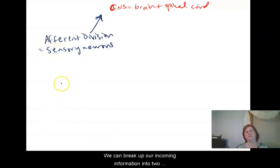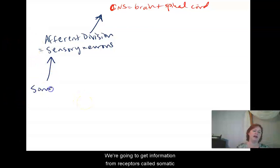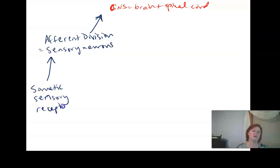We can break up our incoming information into two primary sets of information. We're going to get information from receptors called somatic sensory receptors and we're going to get information from visceral sensory receptors.